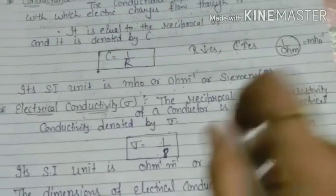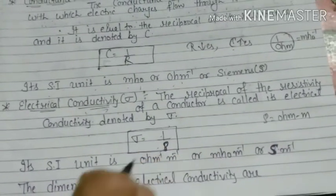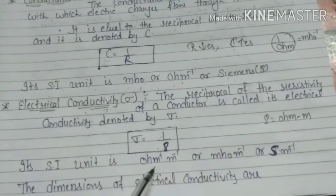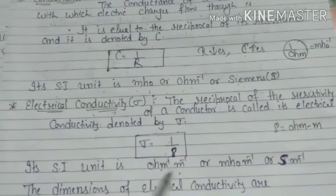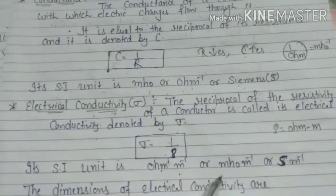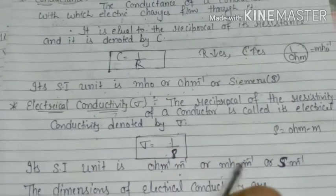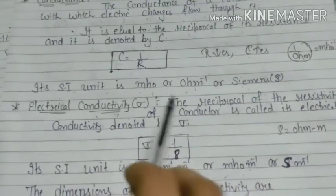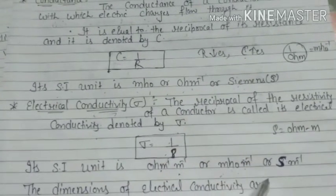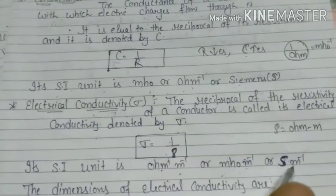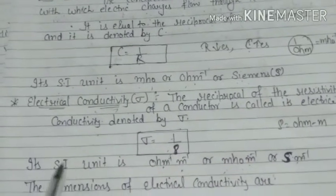तो σ का reciprocal करेंगे तो unit बन जाएगी ohm⁻¹ m⁻¹। इसको हम ohm inverse meter inverse लिख सकते हैं। ohm inverse को mho बोलते हैं, तो unit बनती है mho·m⁻¹। mho को Siemen (S) भी बोल सकते हैं, तो unit है Siemen per meter या Siemen·m⁻¹।